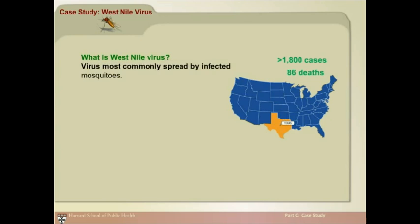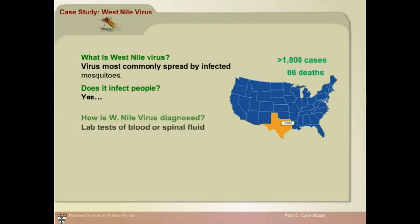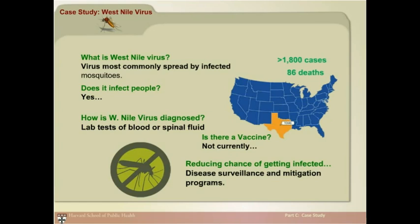West Nile virus is commonly spread by infected mosquitoes. About one in five people who are infected will develop a fever with other symptoms. Less than 1% of infected people develop a serious, sometimes fatal, neurological illness. Diagnosis is by lab tests of blood or spinal fluid. Currently, there is not a vaccine.